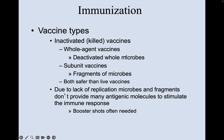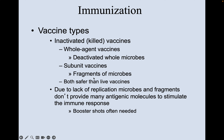The next vaccine type is inactivated or killed vaccines — whole agent vaccines with deactivated whole microbes. There are also subunit vaccines using fragments of microbes, blended up so they're all dead and incapable of causing disease. Both are safer than live vaccines since they can't cause disease. However, due to a lack of replication, the microbes and fragments don't provide as many antigenic molecules to stimulate an immune response, so booster shots are often needed.